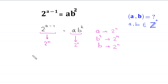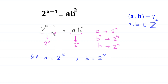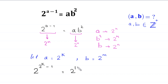So we suppose that a is equal to 2 to the power k and b is equal to 2 to the power m. So this given equation will become: 2 to the power (2 to the power k) minus 1 is equal to 2 to the power k times (2 to the power m) whole squared.